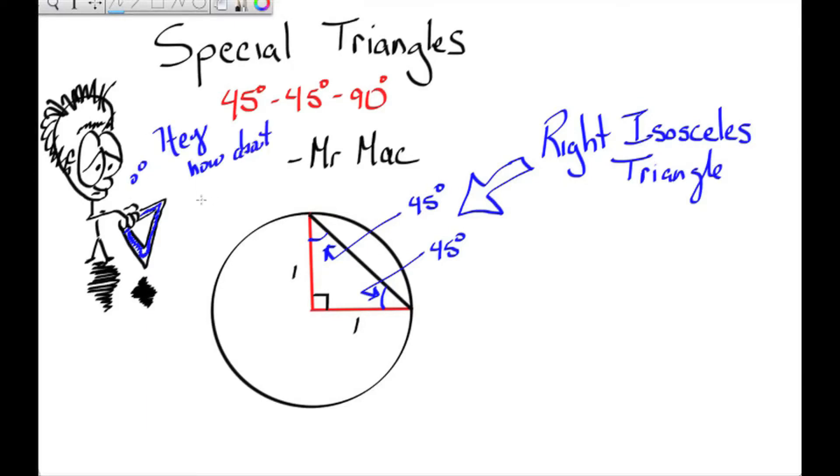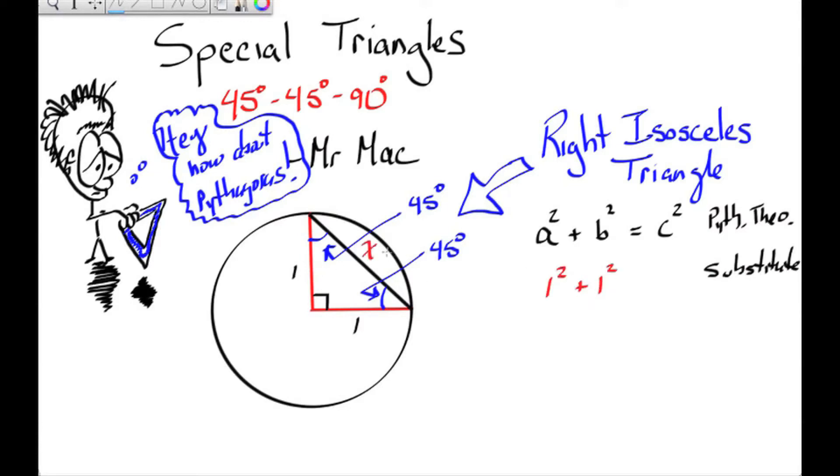So at this point, you're saying, how about Pythagoras? We can use him here. So we got a squared plus b squared equals c squared. If I'm trying to find the hypotenuse x, I can substitute 1 in for the legs and solve for x, and I get root 2.